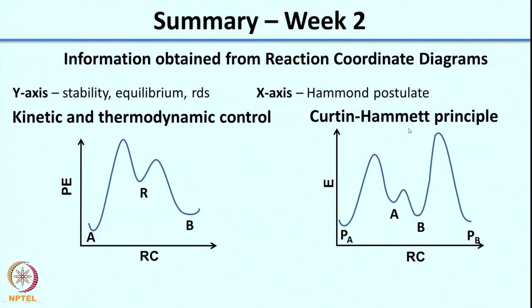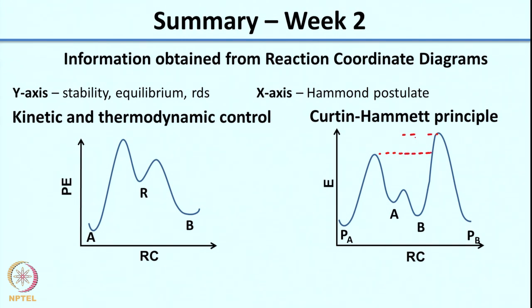We also looked at the Curtin-Hammett principle, which tells you the ratio of products formed when you have two conformers A and B that can interconvert relatively easily, hence a small energy of interconversion. The product ratio PA and PB is dictated mainly by the activation energy difference for formation of PA from A and PB from B. The larger this difference, the greater the selectivity, and based on the Curtin-Hammett principle this determines the major product.